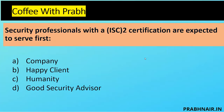Security professionals with the ISC² certification are expected to serve first — option A company, B happy client, C humanity, or D good security advisor. When you talk about ISC², they always say people safety. Remember the four canons of ISC², because they are testable in the exam. From the canon point of view, the first thing is people safety, not a company. I want to be a good human beyond being a good security advisor. So the closest option is C, humanity.